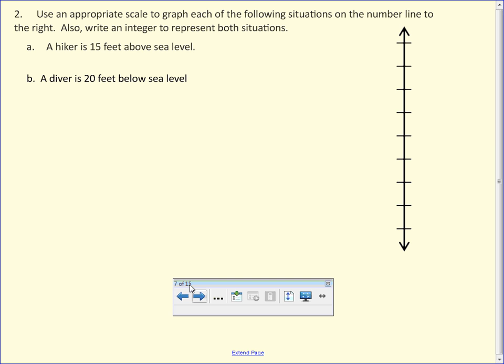Use an appropriate scale to graph each of the following situations on the number line to the right. Also, write an integer to represent both situations. Before I go in and start throwing numbers on this number line, what do I have to think about first? Should I just start at 100, 200, 300, and so on? Where am I going to get information that's going to help me decide how to label my number line? Let's first go see what integers I need to plot. So, how would I write that a hiker is 15 feet above sea level? Positive 15. And how would I write that a diver is 20 feet below sea level? Minus 20. So, I know that my scale has to go from minus 20 to 15.